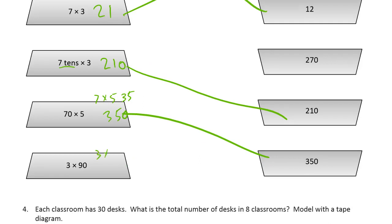And three times ninety. Think three times nine, which is twenty-seven. But if it was twenty-seven tens, it would be two hundred seventy.